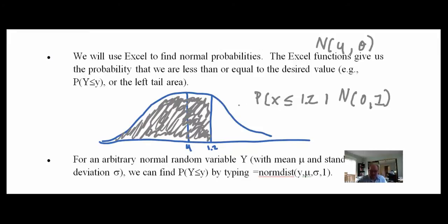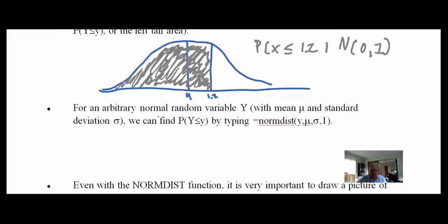In Excel, for a normal random variable y with mean mu and standard deviation sigma, we find the probability that Y < y by typing NORMDIST(y, mu, sigma, 1). This works for any normal distribution — I can put any mu and sigma without converting to the standard normal. That's why we like Excel: it does the conversion automatically.